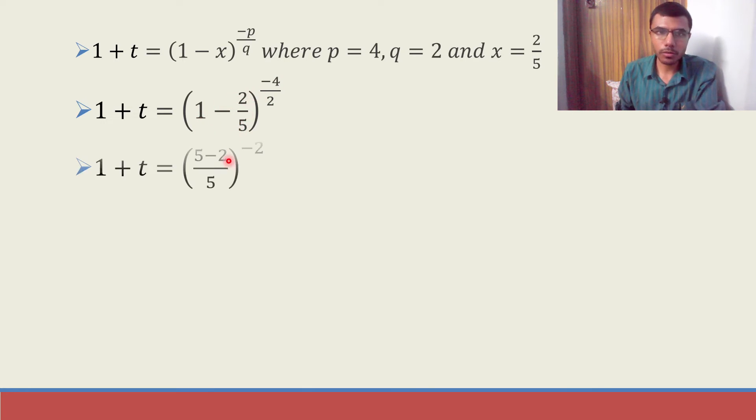Take basic LCM. So (5 - 2)/5. I'll get 5 - 2 is 3 and also 2 ones are 2, 2s are... So in the power I am left out with -2. Here I get (3/5)^(-2).